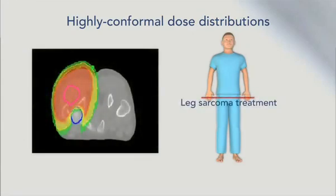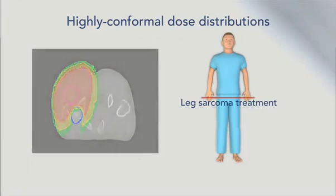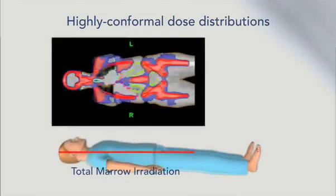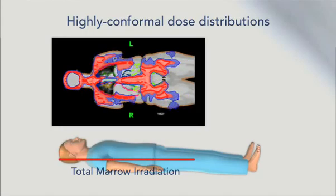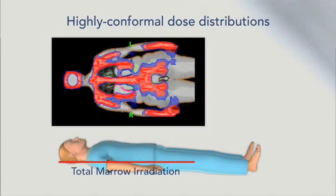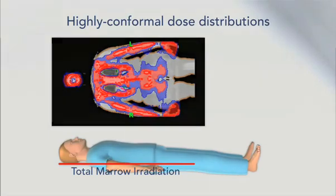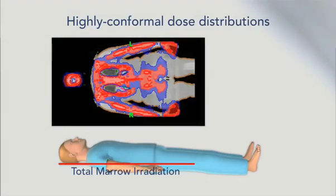In this leg sarcoma case, keeping the high dose region away from the right femur was a key objective. A technique known as total marrow irradiation, or TMI, can be used as preparation for a bone marrow transplant. With this exquisite dose sculpting, the brain, eyes, thyroid gland, lungs, heart, liver, kidneys, and small bowel are all protected. With TMI, the goal of white blood cell depletion is achieved, but with few gastrointestinal complications.